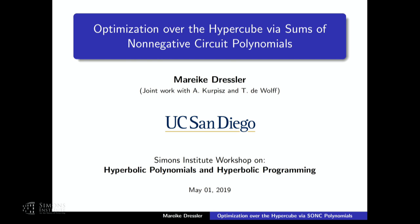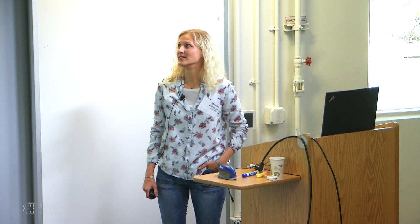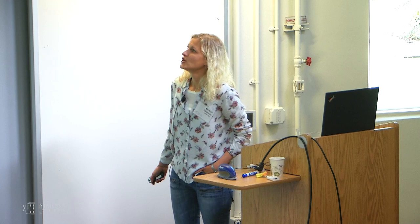So speaking next is Wright Bressler. Thank you, James, and thanks to all the organizers for giving me the chance to speak today. My talk is about optimization over the hypercube via sums of non-negative circuit polynomials, and this is joint work with Adam Kurpich and Timo DeWolf. Since the audience is really diverse, I will spend the first couple of slides on some basic background and context, then introduce sums of non-negative circuit polynomials, give an overview of constraint polynomial optimization with these polynomials, and after that we will tackle optimization over the hypercube.